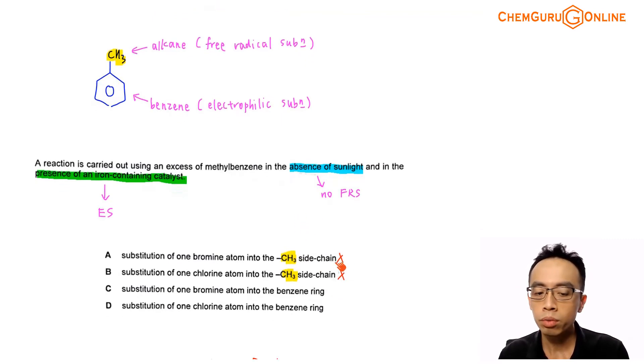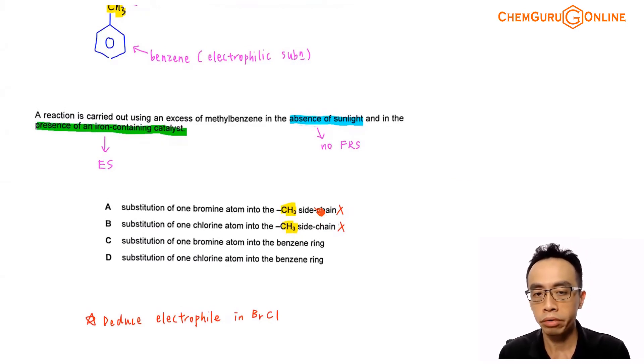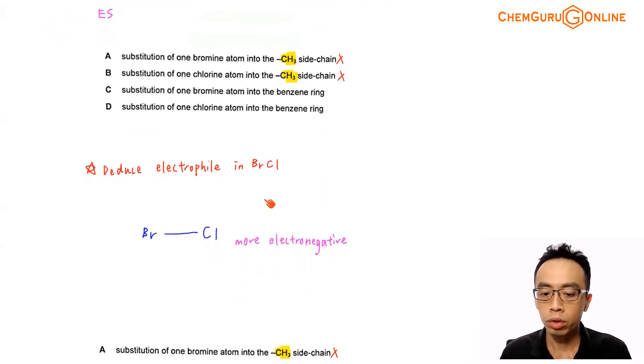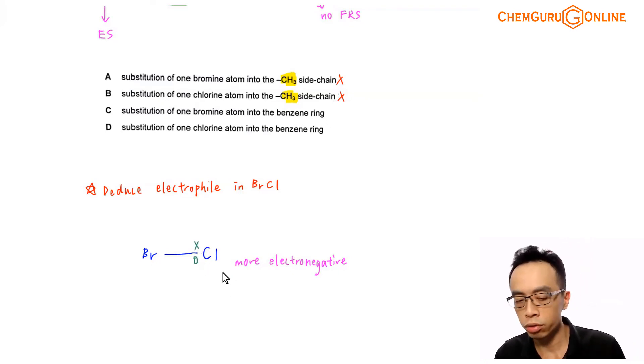Now how do I decide whether it is bromine substituting into benzene or chlorine substituting into benzene? What we have to do is we have to deduce the electrophile because benzene is electron-rich and therefore it will react with an electrophile which is electron-poor. And what we do is we look at the reactant bromine bonded to your Cl. Now if it is a bromine attached to your Cl, chlorine is more electronegative and if it is more electronegative, you'll be able to pull the electron pair closer to itself in this covalent bond.